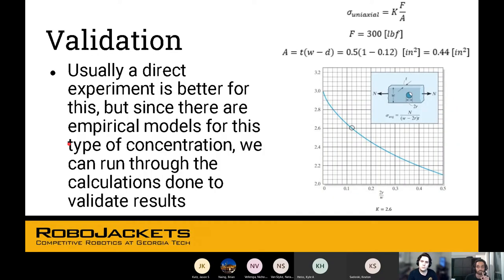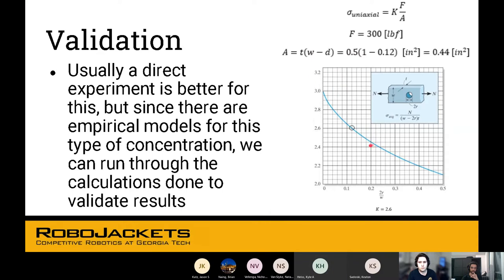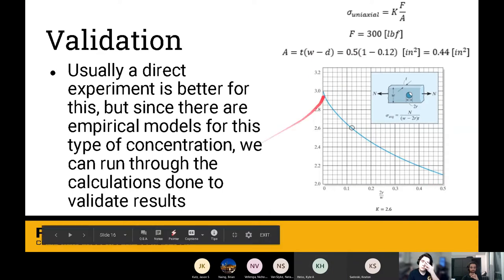Validating your results. Now a direct experiment is better for this, but this is just a basic example. We don't expect you to go create this thing in real life and run tests on it. But the good news is that other people have done that already. There are empirical models for this kind of concentration. We can use this graph to run our calculations and validate the results. This is the formula: F over A gives you the stress and this K is a constant that comes from here.